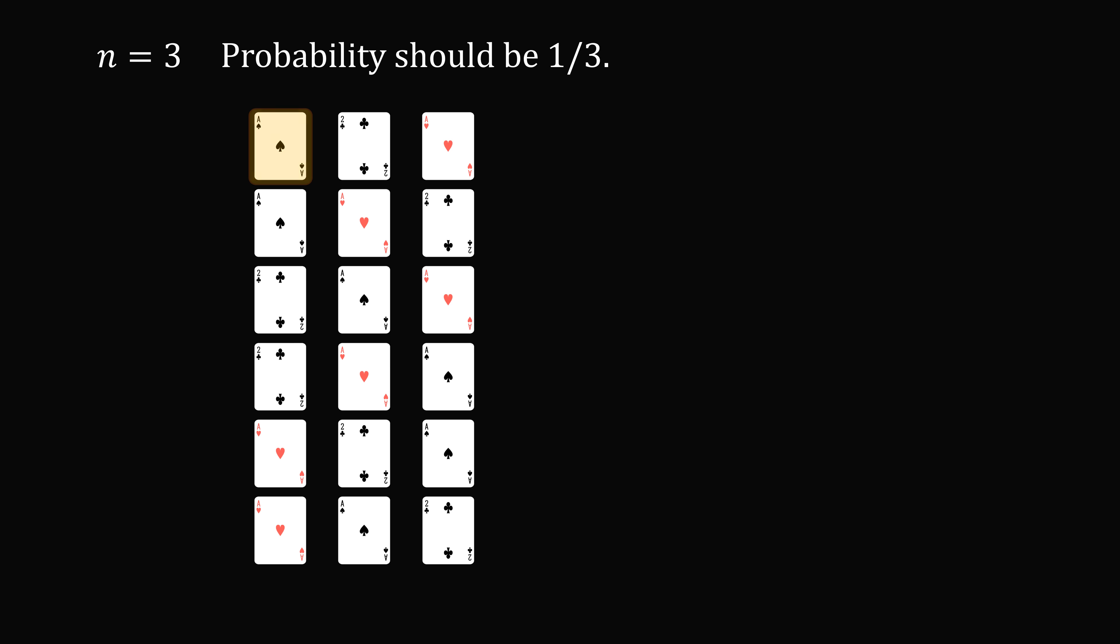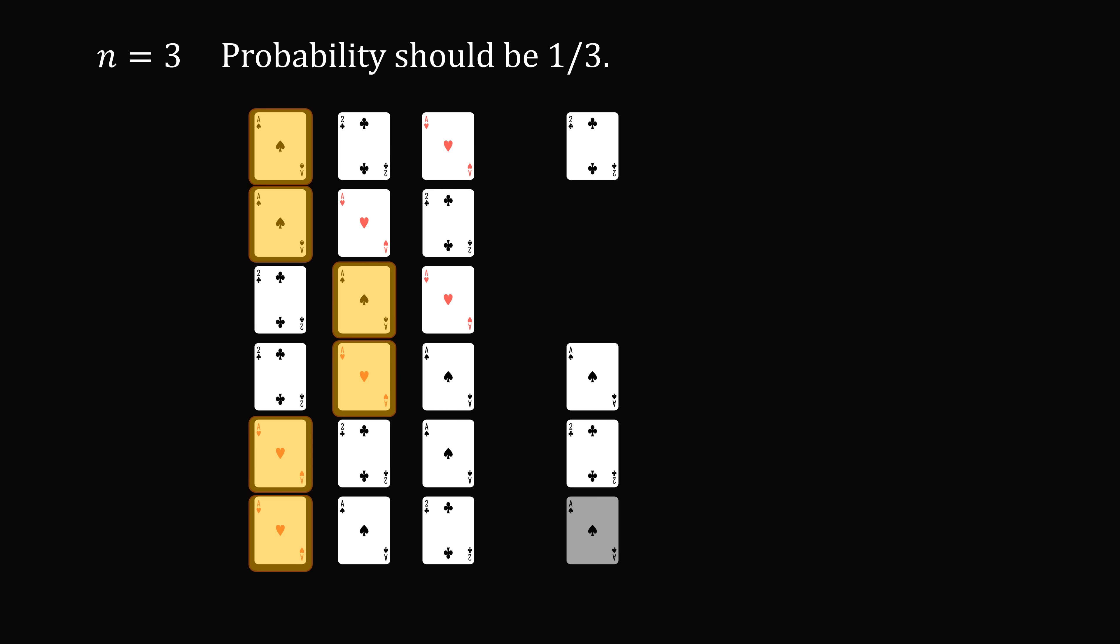So now, we want to take the very first ace in each arrangement and see which card immediately follows it. So in the first arrangement, it's the two of clubs. In the second arrangement, it's neither the ace of spades nor the two of clubs. In the third arrangement, it's again neither of those two cards. In the next arrangement, it will be the ace of spades, then we have the two of clubs, and finally we have the ace of spades.